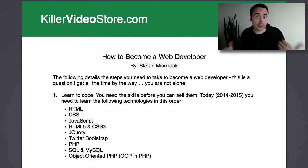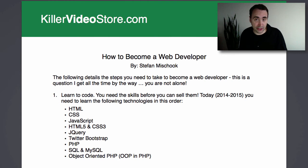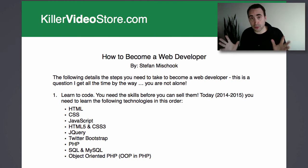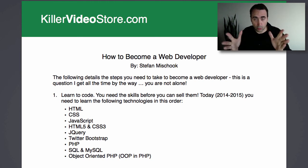Next, you have Twitter Bootstrap. This may catch people by surprise. Twitter Bootstrap is a framework — basically a collection of HTML, CSS, and JavaScript code. The whole point of Twitter Bootstrap is to make it easy to create sites that are responsive, meaning sites that work on any device: desktop computers, iPads, iPhones, Android devices. Using Twitter Bootstrap as the framework for your site really speeds up the process and is very important.